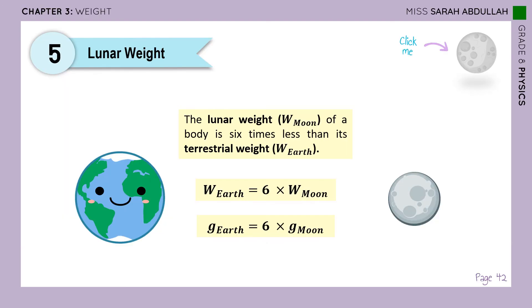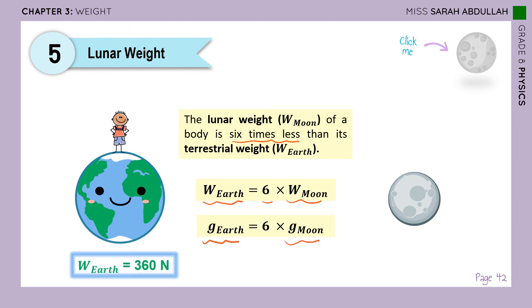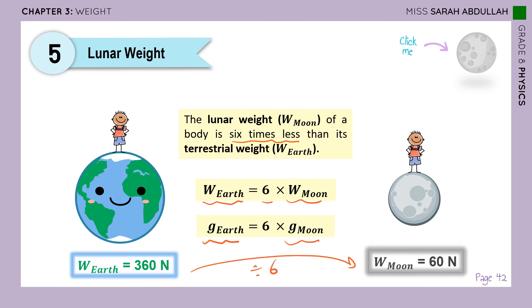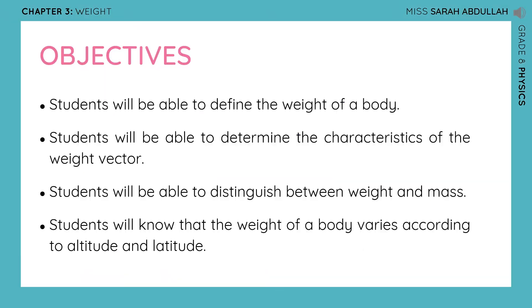We can conclude that the lunar weight — the weight on the Moon — of a body is six times less than its terrestrial weight — the weight on Earth. So: weight on Earth = 6 × weight on Moon, and g_Earth = 6 × g_Moon. For example, if your weight is 360 N on Earth, on the Moon it would be 360 / 6 = 60 N. That's how weight varies from one place to another. That's it — we're done with the weight chapter! If you have any questions, ask me in our live session. Stay safe, take care, bye bye!